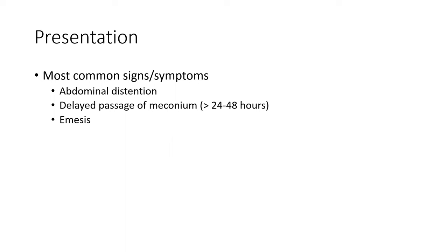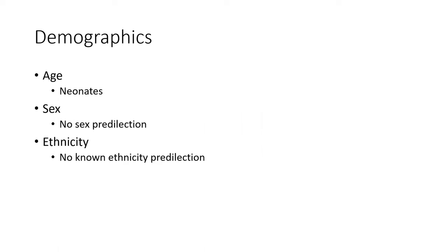The most common signs and symptoms are abdominal distension and delayed passage of meconium, more than 24 to 48 hours. Regarding demographics: no sex predilection and no known ethnicity predilection.